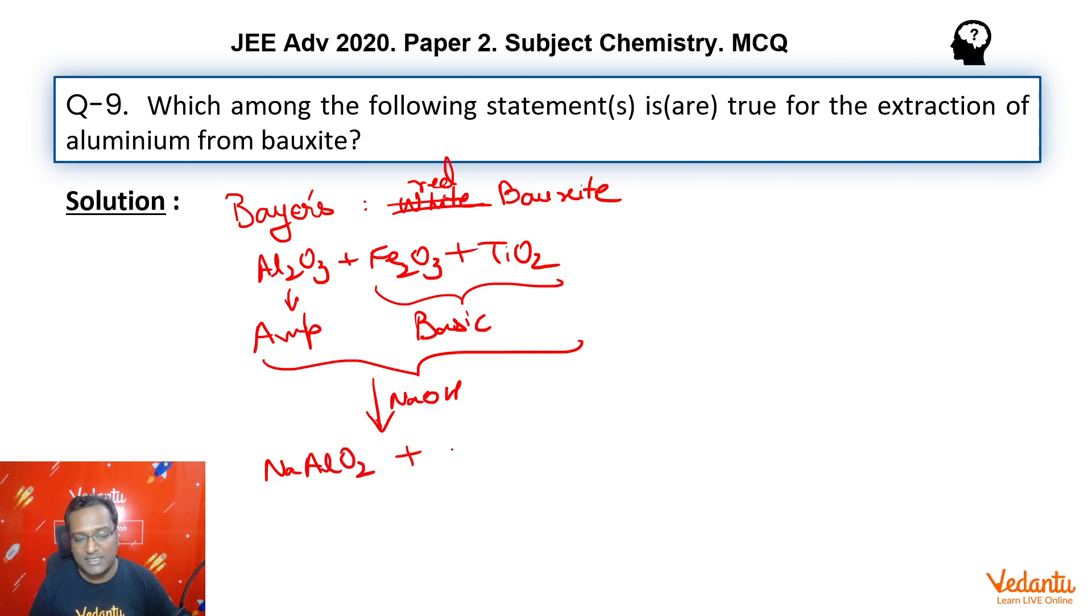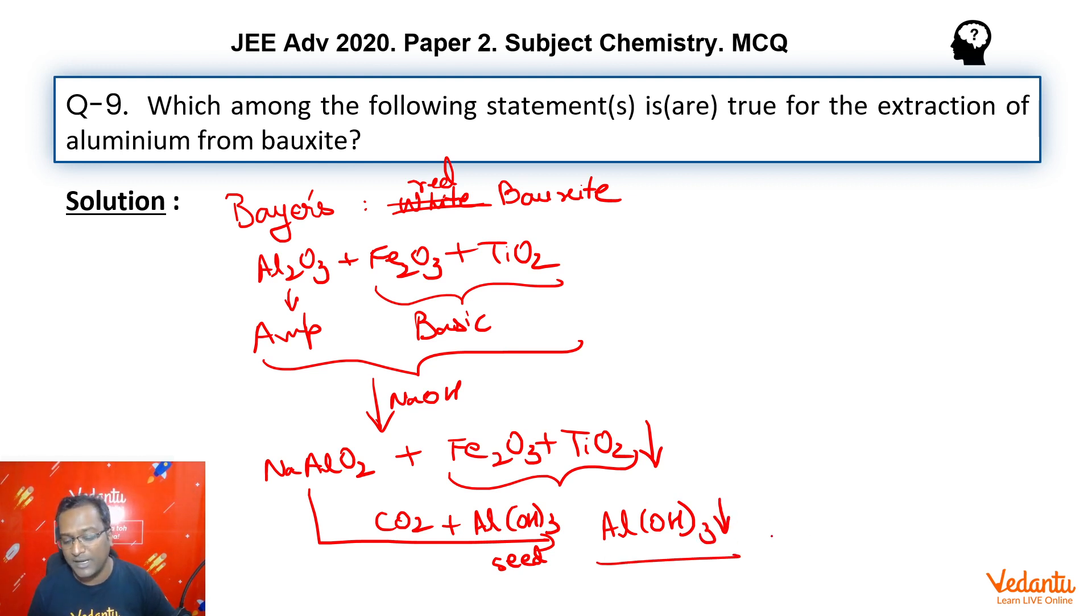The rest of the basic impurities remain undissolved - that is Fe2O3 and TiO2. We then take NaAlO2, acidify the solution, and add a small bit of Al(OH)3 as a seeding agent. We then see Al(OH)3 precipitating away - that is hydrated alumina.